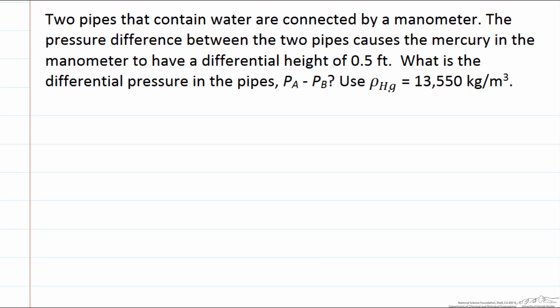The reason we do that is so that we can measure the pressure difference between the two pipes. In a certain circumstance the pressure difference between the two pipes causes the mercury in the manometer to have a differential height of 0.5 feet. Based on that what is the differential pressure in the pipes, the pressure between pipes A and pipes B? We are going to use that the density of mercury is 13,550 kg per meter cubed.